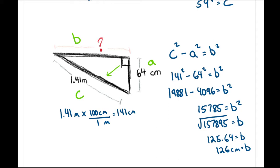We can always use unit analysis: take the units you have, multiply by a unit rate with the units you want on top and the units you have on the bottom, and that gives you the conversion. It's a helpful skill to have, because in everyday life you're always going to be dealing with different units and different measurements.